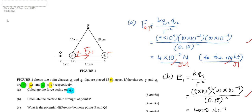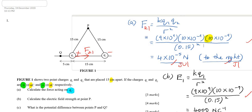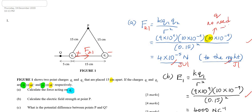F two-on-one equals k times q1 times q2 over r squared. Substitute k as 9×10⁹. For the charges q1 and q2, even though q2 is a negative charge, we do not put the negative sign here — no need for the negative sign — because we just want to find the magnitude.